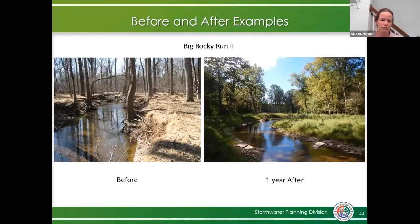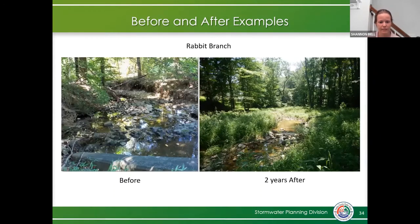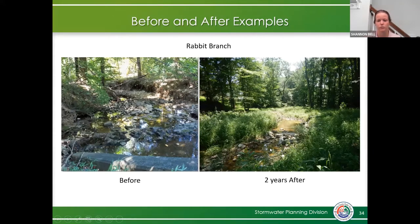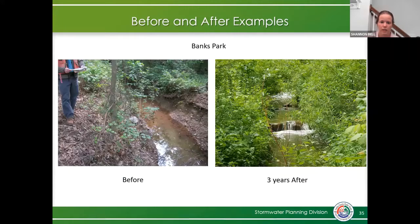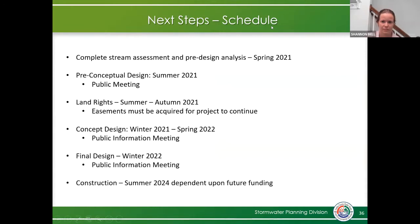Here are some more before-and-after pictures. This one is Big Rocky Run and what it looks like one year after. Here is Rabbit Branch — one of the projects where we tried to minimize tree loss and were able to preserve a lot of the canopy. You can see the area is shaded, which helps lower stream temperature and improves aquatic life. And here is Banks Park — three years after construction, you can really see our vegetation taking off. That's all I have for now.